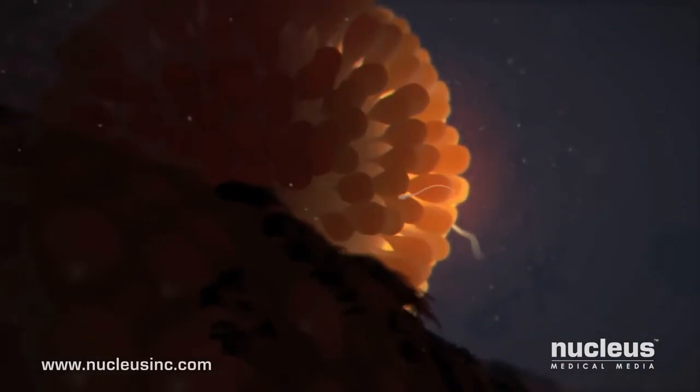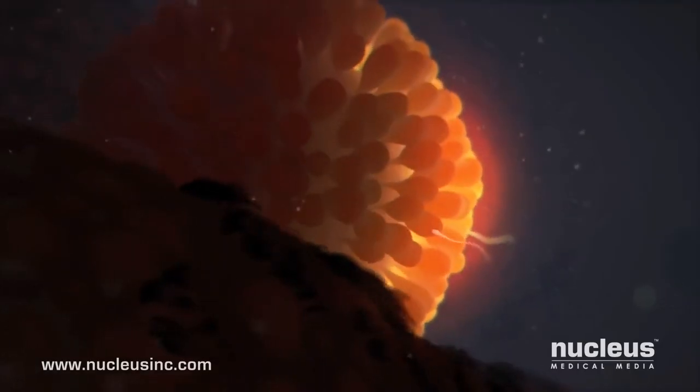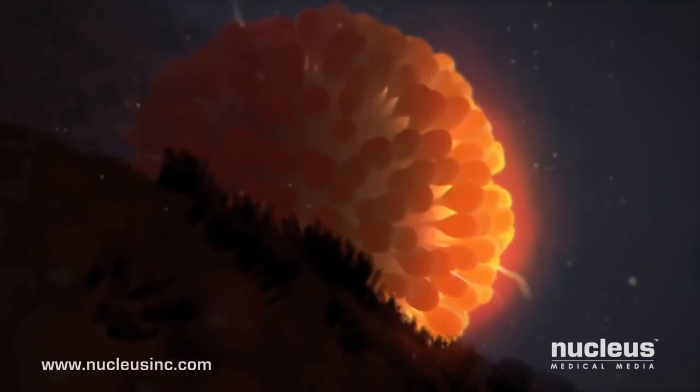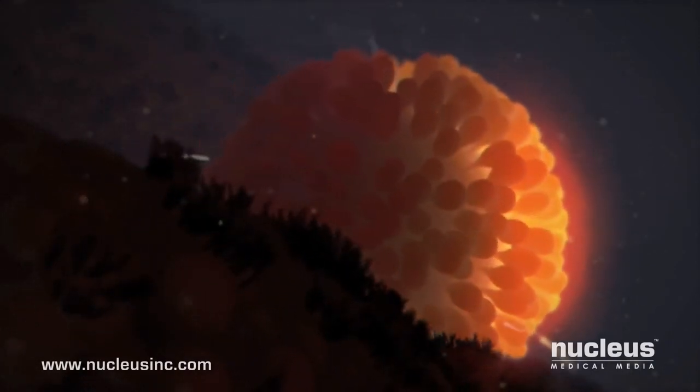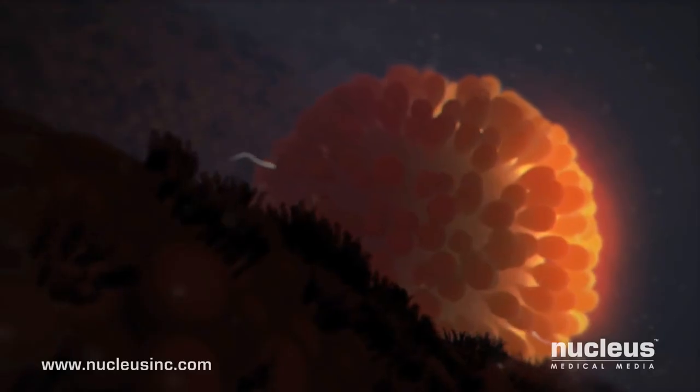And now, the cilia in the fallopian tube gently sweep the zygote toward the uterus, where he or she will implant in the rich uterine lining, growing and maturing for the next nine months until ready for birth.